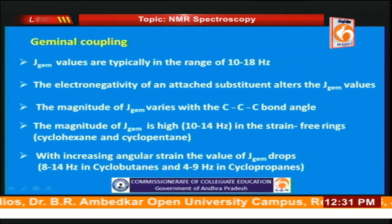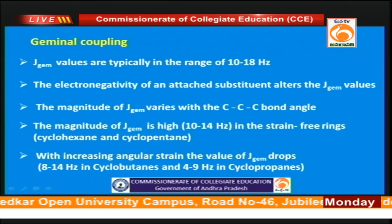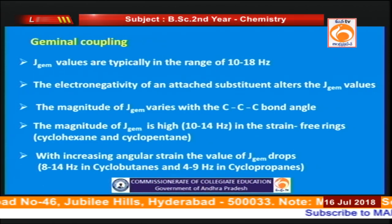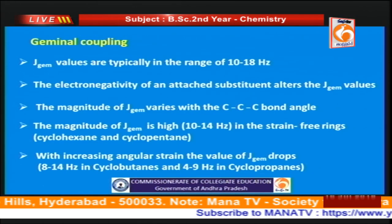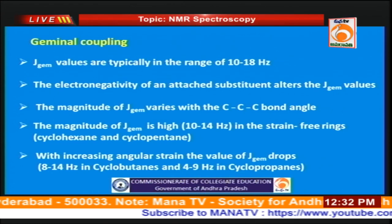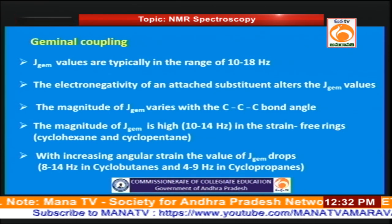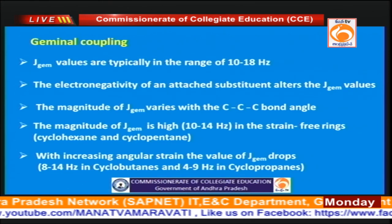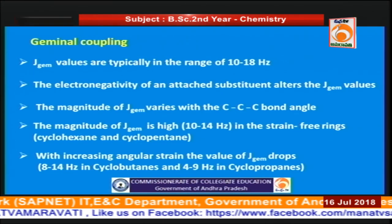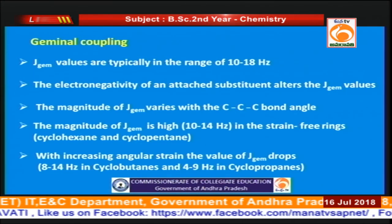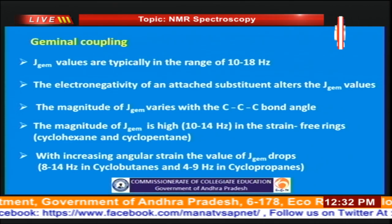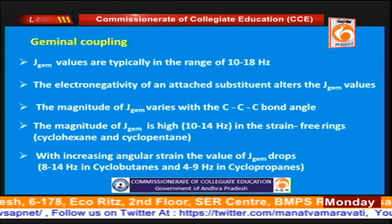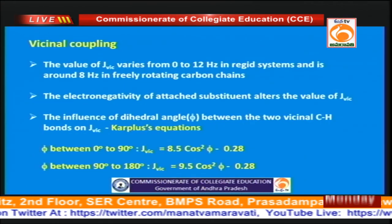Now let us consider the concept of geminal coupling. Geminal coupling is indicated by J_gem and the values are generally in the range of 10 to 18 Hz. Electronegativity has an effect on the geminal coupling values, and the magnitude of J_gem will depend on the bond angle. Generally it will be high in the case of rings having less strain, and as the angle strain of the ring increases, the J values will decrease.